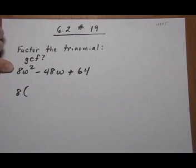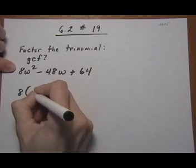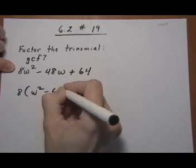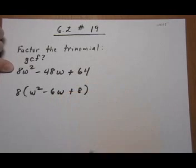Any time you can pull out a GCF, it's going to make the rest of your factoring easier. So we have leftovers: w squared minus 6w plus 8.